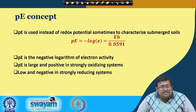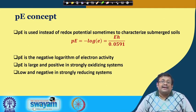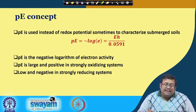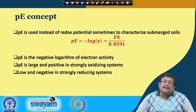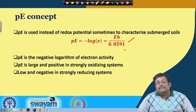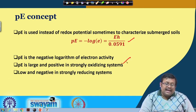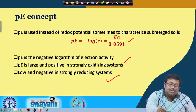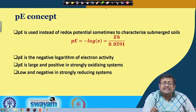Another concept is Pe, used instead of redox potential to characterize submerged soils. Pe is the negative logarithm of electron activity: Pe = −log(e) = Eh / 0.0591. Pe is large and positive in strongly oxidizing systems and low and negative in strongly reducing systems. Nowadays Pe is also used for characterizing submerged soils.